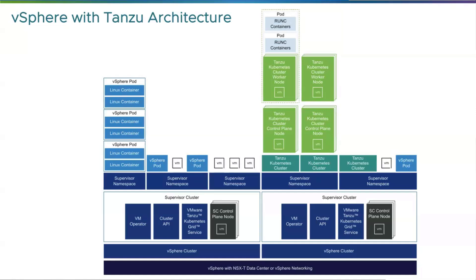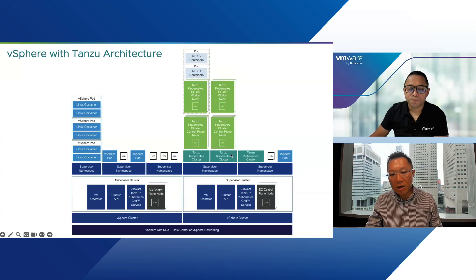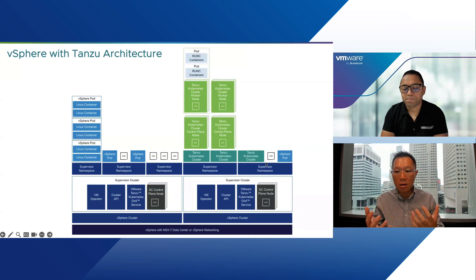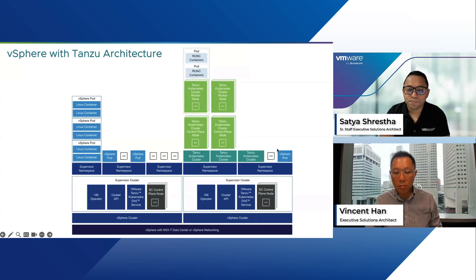A lot of people might question why you need different kinds of workloads. If you look at modern apps, they comprise microservices in the form of containers and Kubernetes pods. But some services still require a virtual machine — for example, a database you might still want running in a VM form factor. So we provide the flexibility to consume different kinds of workloads in a supervisor namespace. Later in the demo you'll see that you can run different kinds of workloads in a single supervisor namespace.